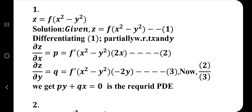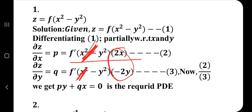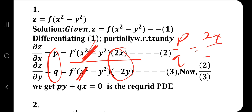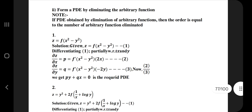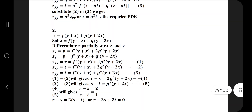We get two equations. To remove the function f', we divide the two equations — f' cancels out. Dividing gives p/q = 2x / (−2y). Cross-multiplying and rearranging gives the final PDE. That's all you have to do for elimination of arbitrary functions. Practice more questions for better understanding.